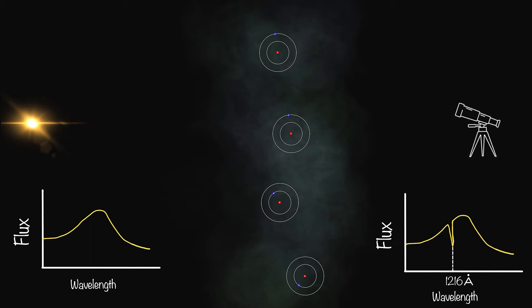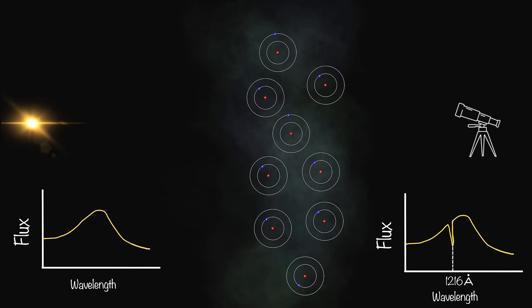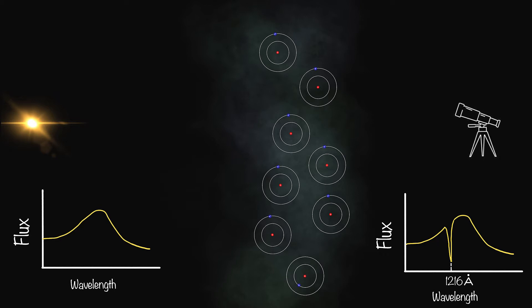Now suppose we increase the density of the hydrogen cloud in the region. In that case, more Lyman alpha photons will get absorbed and the amount of dip in the flux will also increase. So we can estimate the density of hydrogen gas from the strength of the absorption line in the spectra.